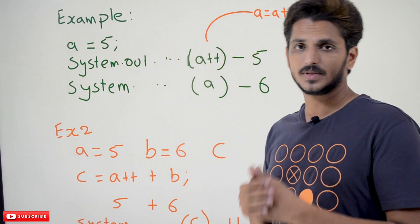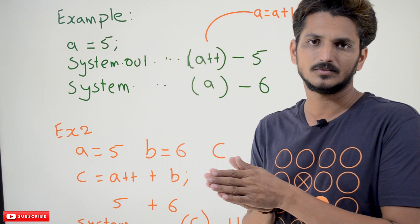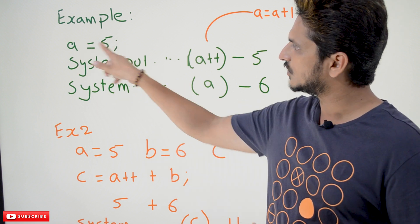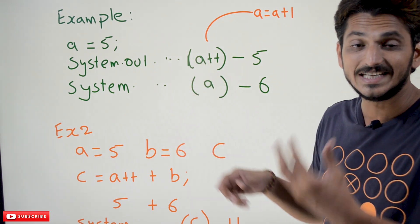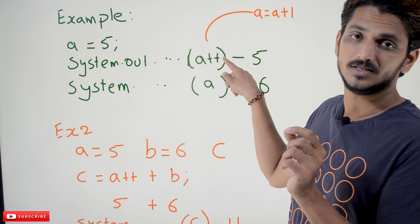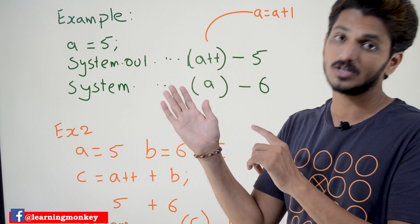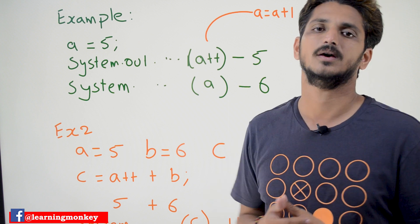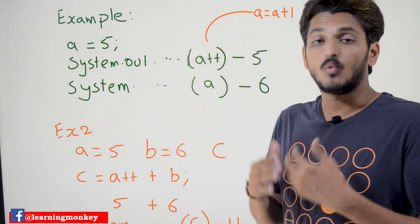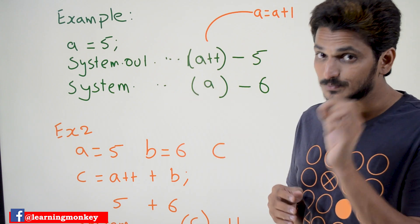Coming to the postfix operators, take the example: a = 5. We are not writing the exact syntax; actual syntax should be int a = 5, but hoping you know the basics. So a = 5. System.out.println of a++ — we applied the ++ operator after the operand. If the operator is written after the operand, we call it postfix. If written before, we call it prefix.